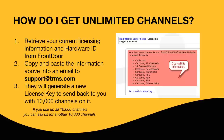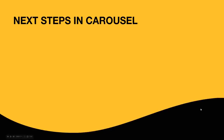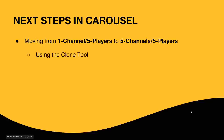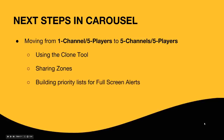Once that's completed, how do we really utilize this on our system? Our next steps will be in Carousel. We're going to talk about moving from a one-channel, five-player system to a five-channel, five-player system. We'll cover using our clone tool to help mimic those channels, how we share some zones to make things easier, and how we can build priority lists for full-screen alerts in Carousel.